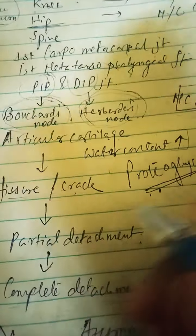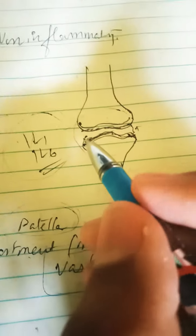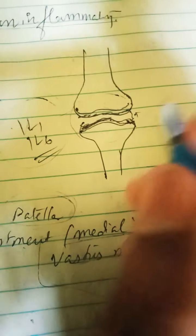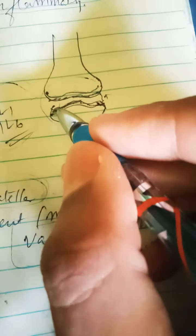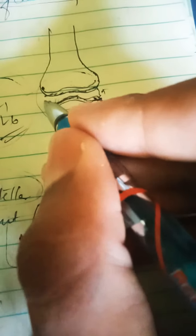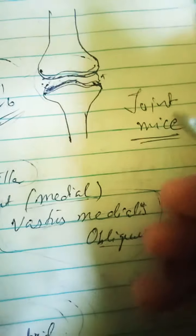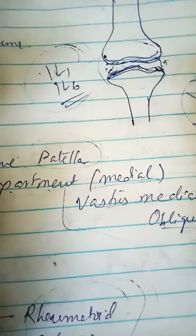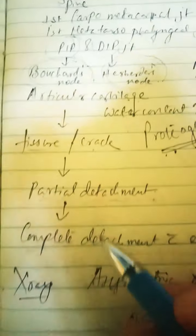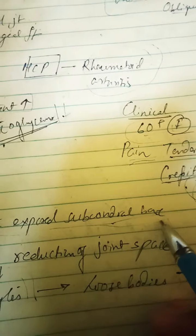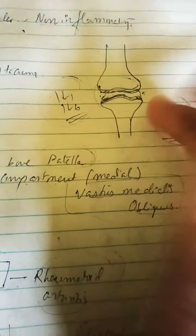Cracks and fissures develop, and the cartilage partially detaches. The chondrocytes are progressively released — these are known as joint mice — which are released from the articular cartilage and taken up by macrophages, creating inflammatory mediation. This causes complete detachment with exposed subchondral bone, and there is a reduction in joint space. On X-ray, we see asymmetric reduction of the joint space.